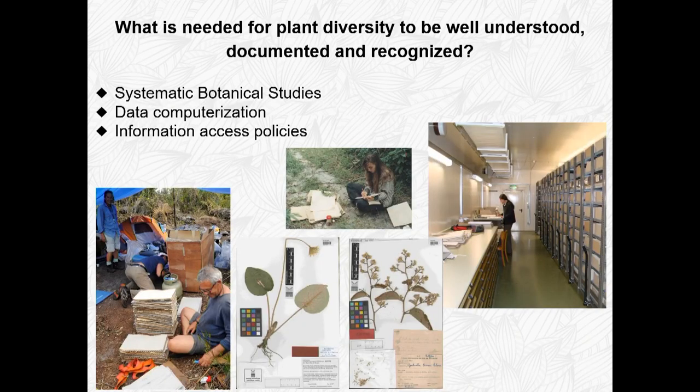The strategy had goals for 2010 and after that, goals defined to 2020. To understand, document and recognise plant diversity, we first need systematic botanical studies. We do that by collecting — going to the field and collecting as much as we can, especially in places where we have less information, such as the Amazon.